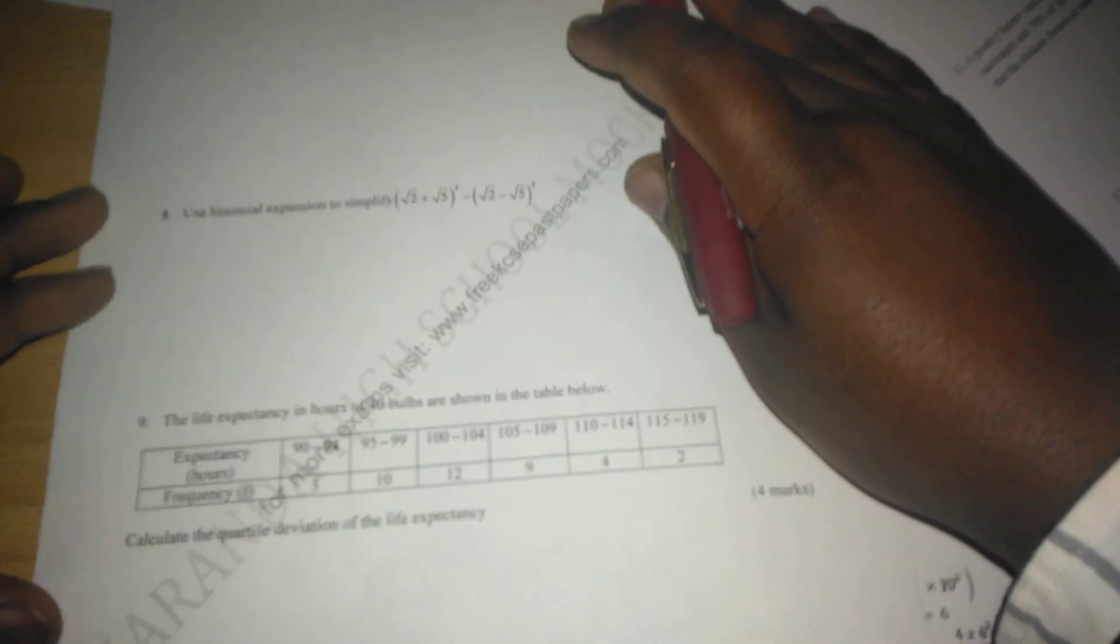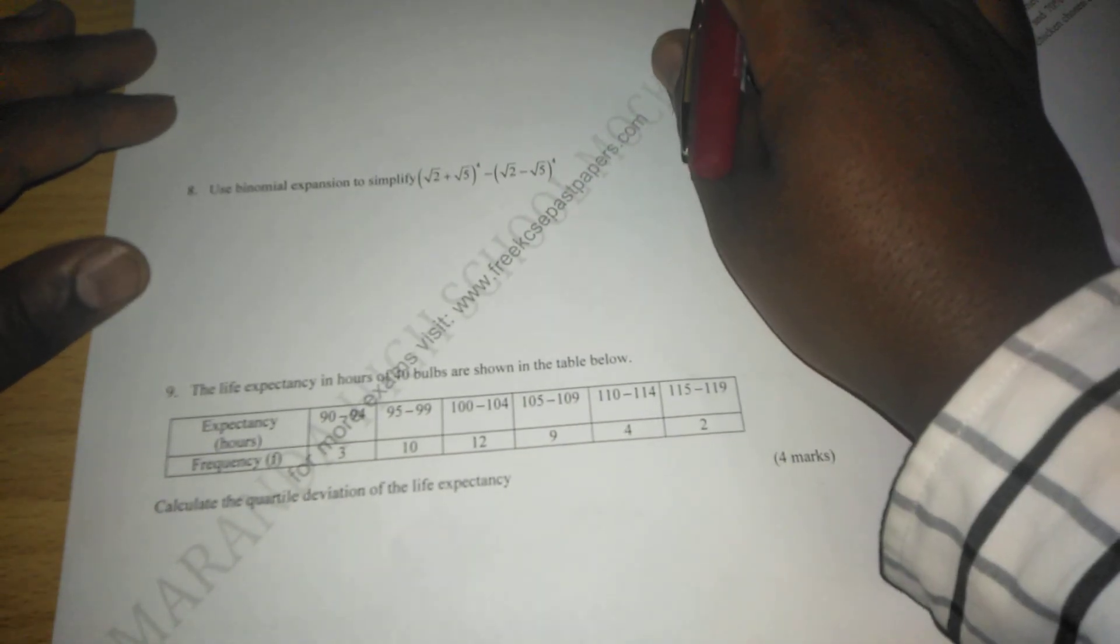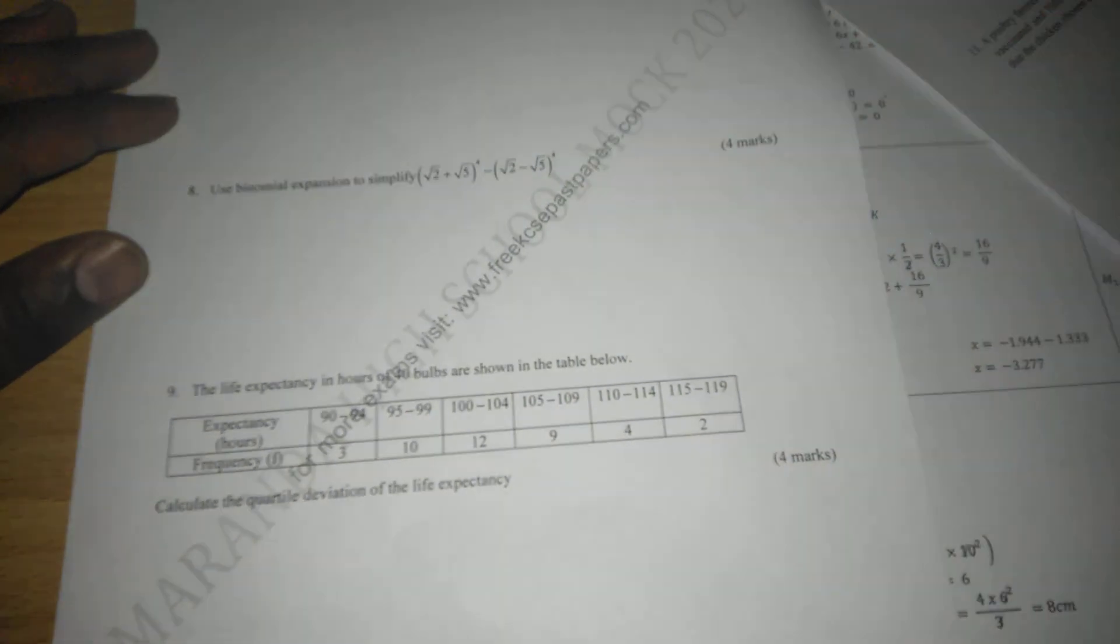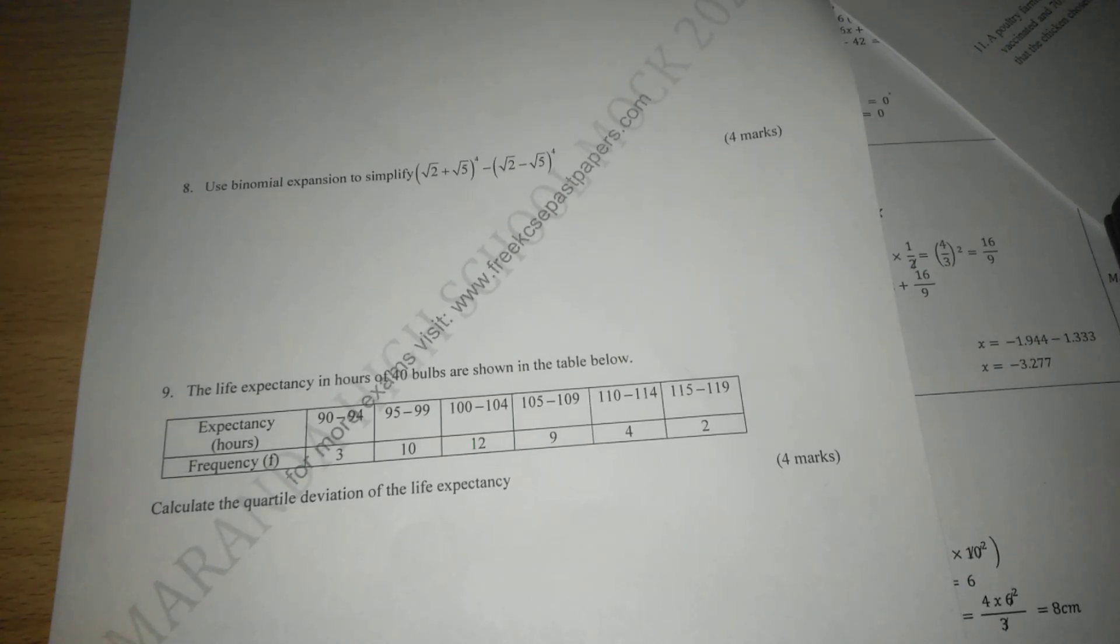So we are told to calculate life expectancy quartile deviation. We know very well for us to get quartile deviation, we first of all have to get semi-interquartile range, which is given by quartile interquartile range, and we divide it by 2.